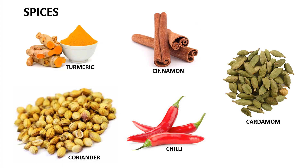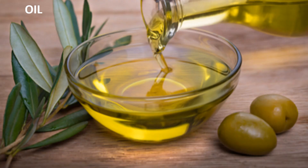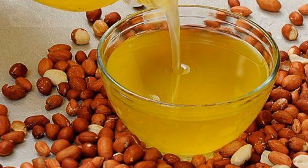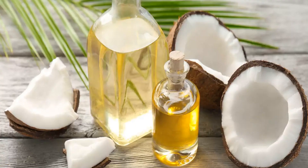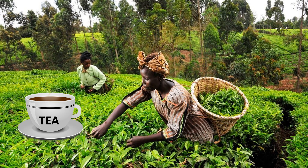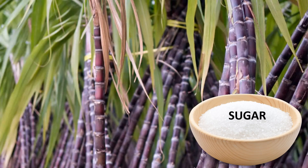From plants we get spices like turmeric, coriander, chili, cinnamon and cardamom. We get oil from plants like olives, sunflower, groundnut, coconut and mustard. We also get coffee, tea and sugar from plants.